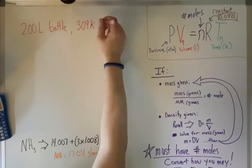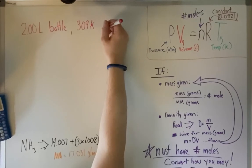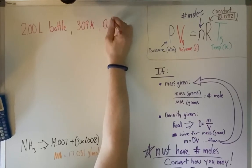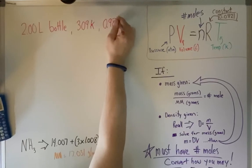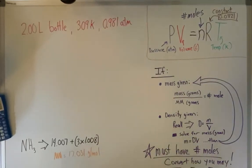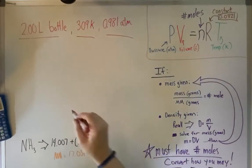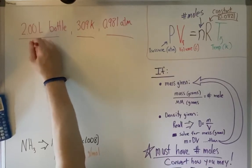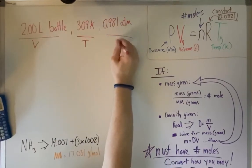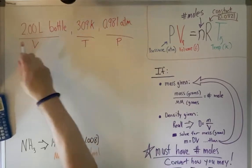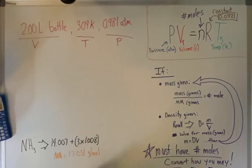And with atmospheric pressure, let's say we're up on top of a mountain. So our atmospheric pressure is going to be 0.981 atmospheres. So I've got liters of bottle, this is my volume, my temperature, and my pressure. And I did them all in the correct units. If they're not in the correct units, you have to convert them.